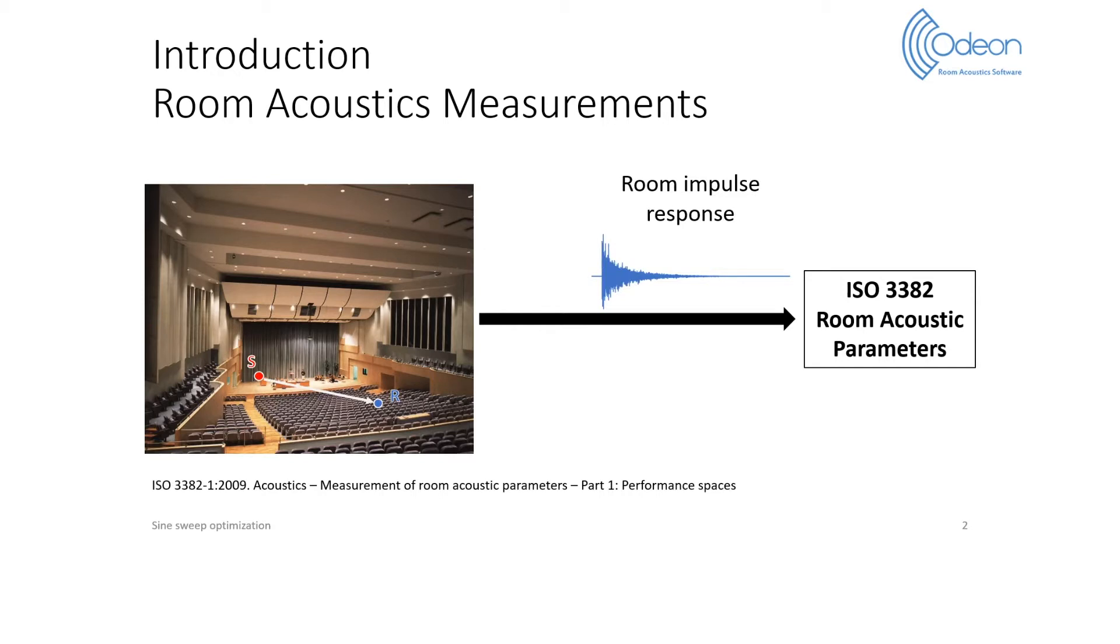These room acoustic parameters can be derived from the measurement of impulse responses between sources and receivers in the room. Numerous methods have been developed to enhance impulse response measurements, but one that has proven particularly robust is the sine sweep method.